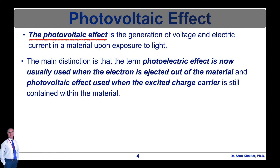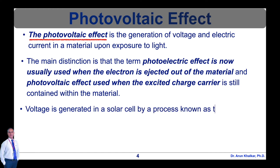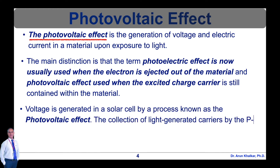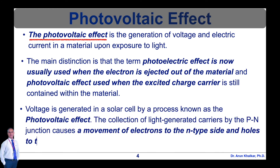But some hot carrier photovoltaic device concepts blur this distinction. Now let's see the photovoltaic effect in a solar cell. The collection of light-generated carriers does not by itself give rise to power generation. In order to generate power, a voltage must be generated as well as a current. Voltage is generated in a solar cell by a process known as the photovoltaic effect.